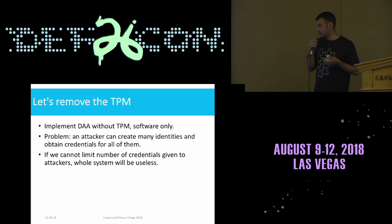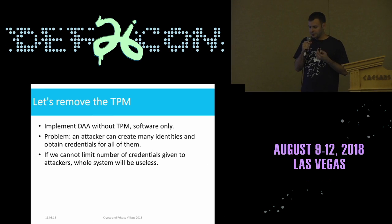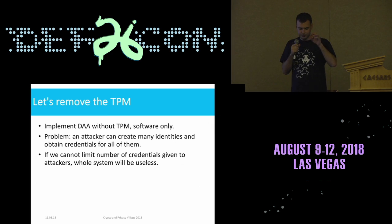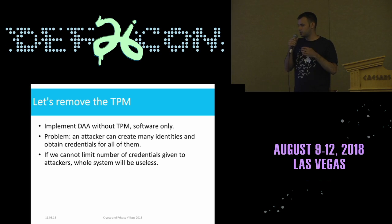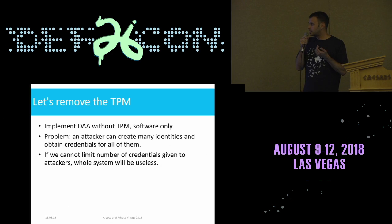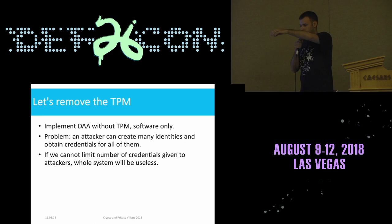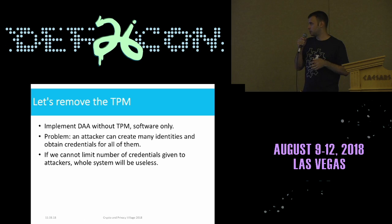So what we did is we implemented the direct anonymous attestation protocol but without the TPM — software only. This opens the possibility of a new problem: the system we showed protects against a single user sending too many messages. But if we remove the TPM, it could be quite easy for an attacker to create many identities, obtain credentials for all of them, and essentially bypass the whole system. Note that this is not a problem with the TPM, because an attacker would need to actually get hold of many physical TPM devices, which is not so easy. So if we cannot limit the number of credentials given to attackers, the whole system will be useless.